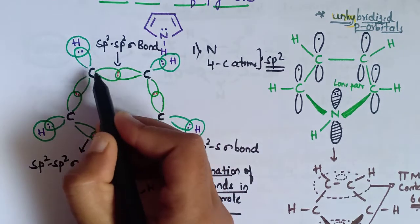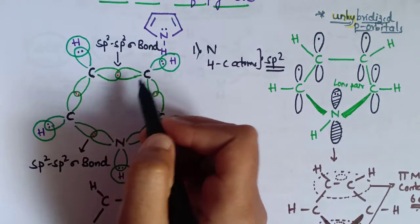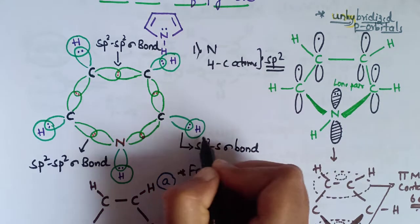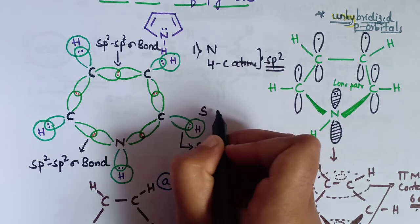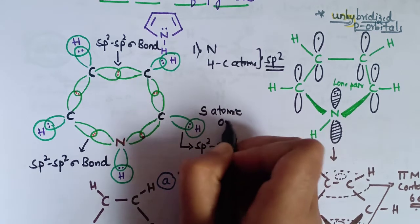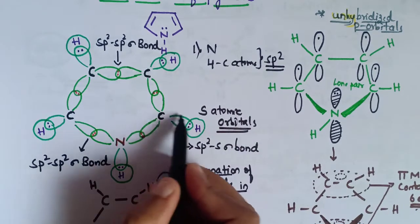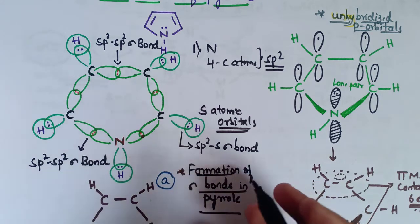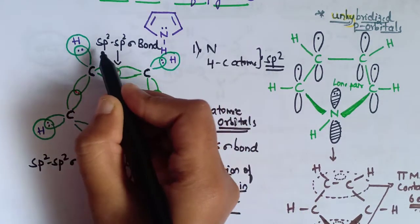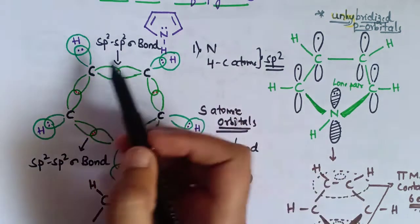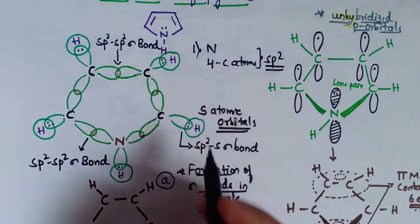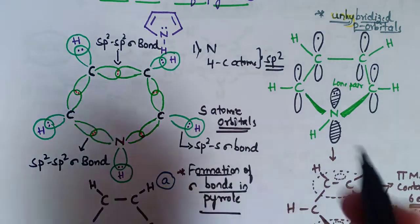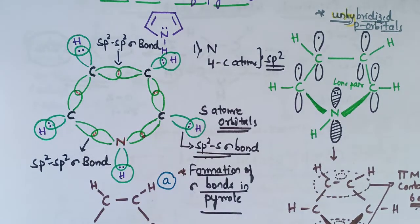Here you can observe that this carbon has sp2 hybridization and this carbon also has sp2 hybridization — they are overlapping with each other. The sp2 hybrid orbitals also overlap with the s atomic orbitals of the five hydrogen atoms, forming sp2–s sigma bonds.